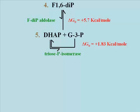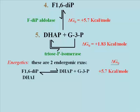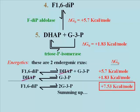The net effect of the two reactions seen here is to split fructose 1,6-diphosphate, a 6-carbon sugar, into two molecules of glyceraldehyde 3-phosphate, two 3-carbon carbohydrates. Added together, these two reactions occur with a total standard free energy change of plus 7.53 kilocalories per mole.